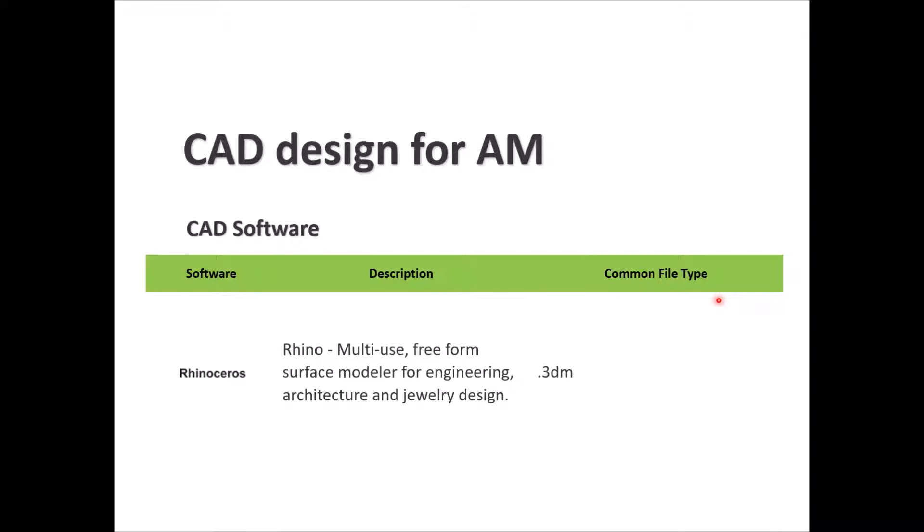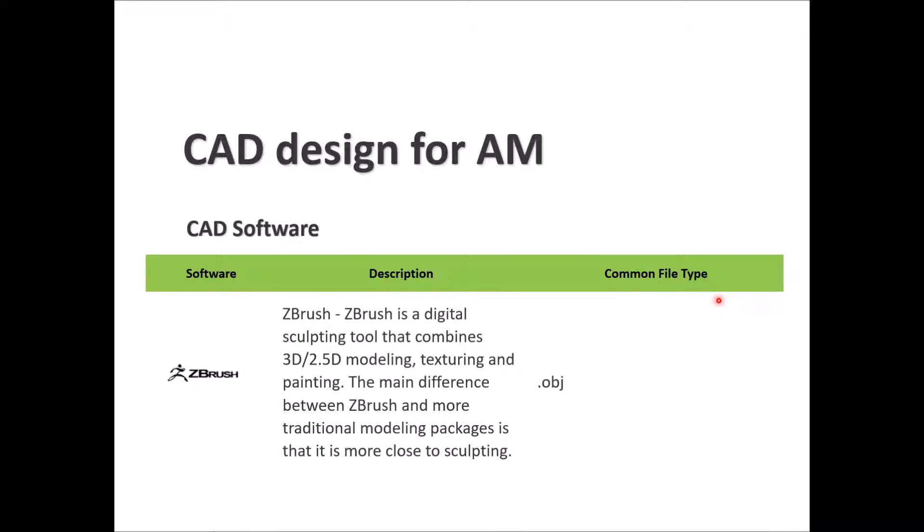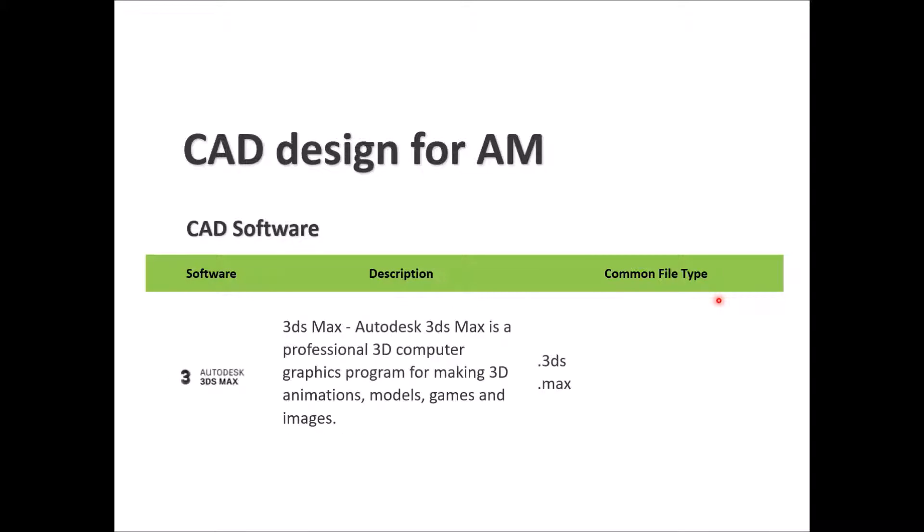ZBrush — common file extension .obj — is a digital sculpting tool combining 3D and 2D modeling, texturing, and painting. Unlike traditional modeling packages, ZBrush is more closely focused on sculpting. Autodesk 3DS Max — file extension .3ds or .max — is a professional 3D computer graphics program used to make animations, models, games, and images.